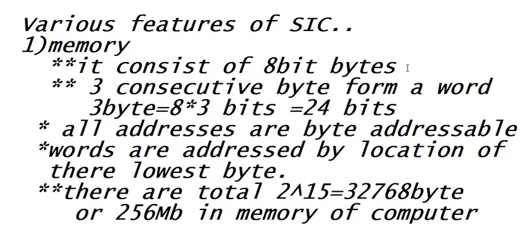Modern computers now have RAM sizes of 4GB, 8GB, 16GB, and even 126GB for supercomputers, but in SIC the RAM size is much less by comparison. The memory of SIC consists of 8-bit bytes, where 8 bits equal 1 byte, and 3 consecutive bytes — that is 3 × 8 = 24 bits — form one word. So 3 bytes form a word in SIC.